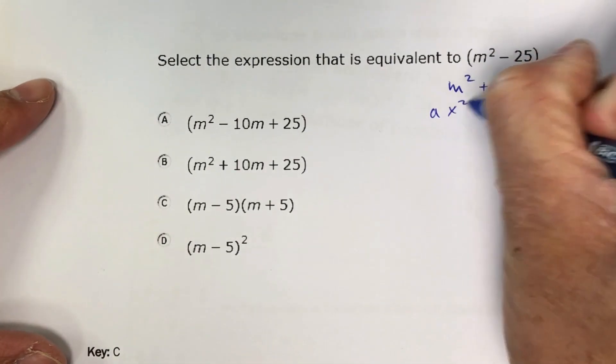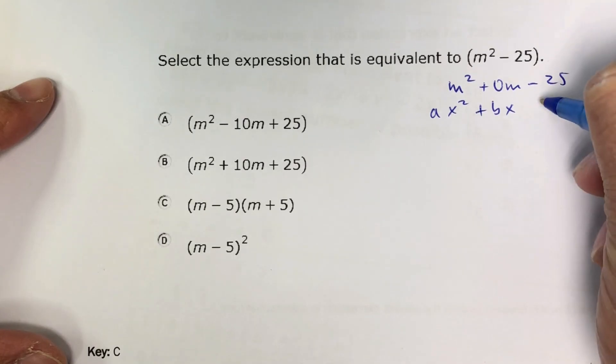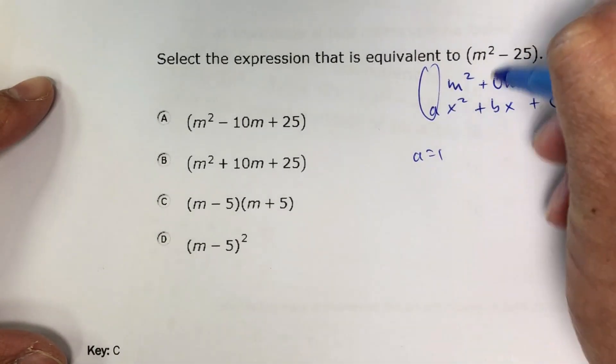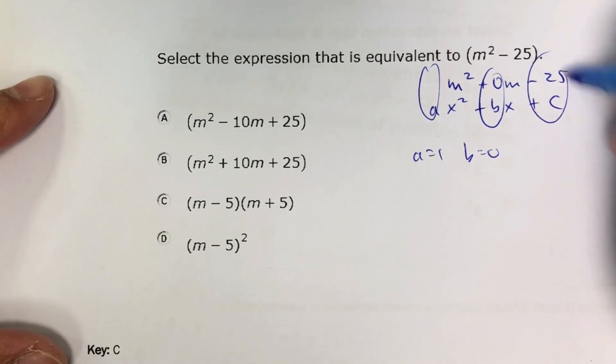Now if you forget those, the standard form for trinomials looks like this. And then you have an a value that's 1, b is 0, and c that's negative 25.